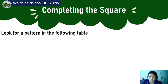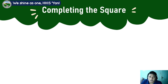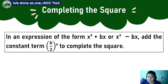We have to look for a pattern in the following table. We have three rows: the incomplete square, the completed square, and the factored form. So we have to take a look at the table. Now, we have to define what is completing the square. When we say complete the square, it's an expression of the form x squared plus bx or x squared minus bx, and we add the constant term b over 2 squared to complete the square.